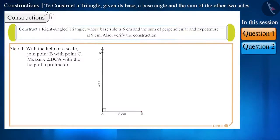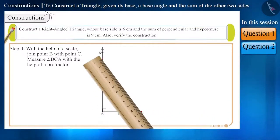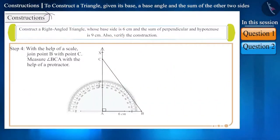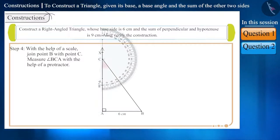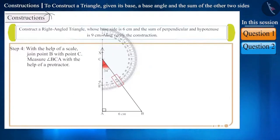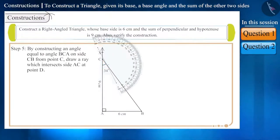Step 4: Now, with the help of a scale, join point B and point C. Now, with the help of a protractor, let's take the measurement of angle BCA. On measuring, angle BCA comes to be 34 degrees.